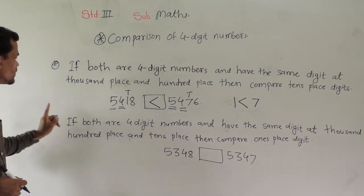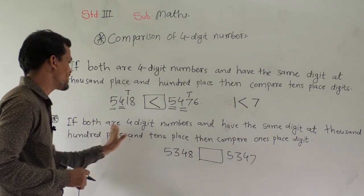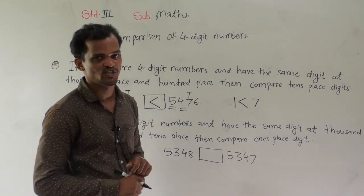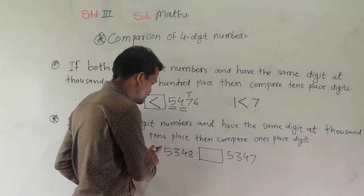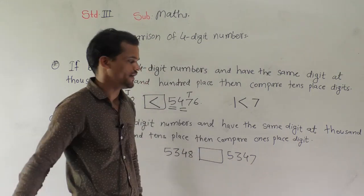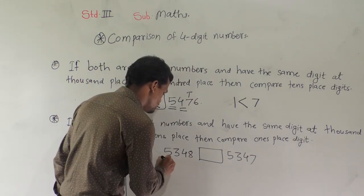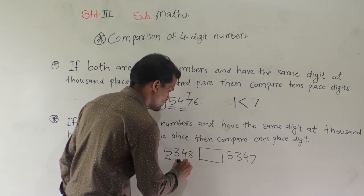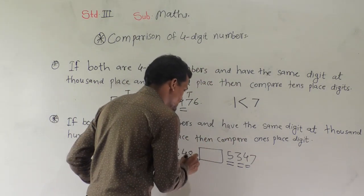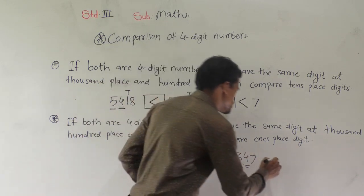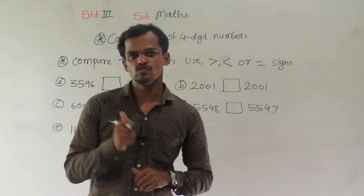The next case: if both are 4-digit numbers and have the same digit at the thousands, hundreds, and tens place, then compare the ones digit. We will see one example: 5348 and another side 5347. We can observe that the thousands digit, hundreds digit, and tens digit are the same in both numbers. So you have to compare the ones digit — 8 is greater than 7, so we will use this symbol.